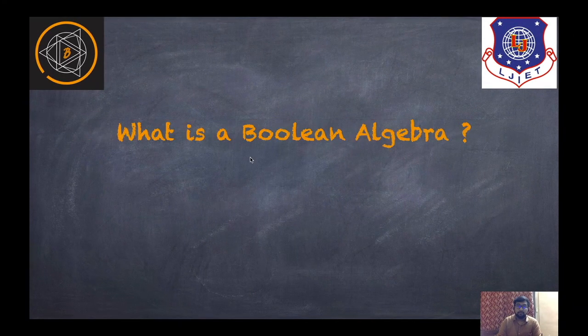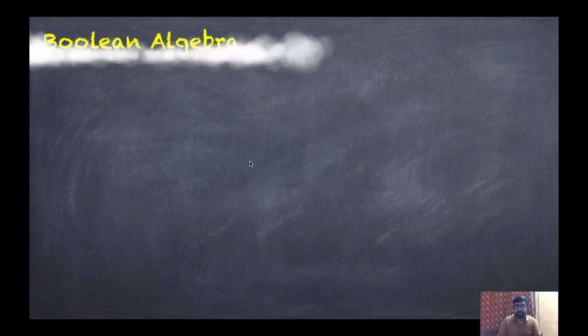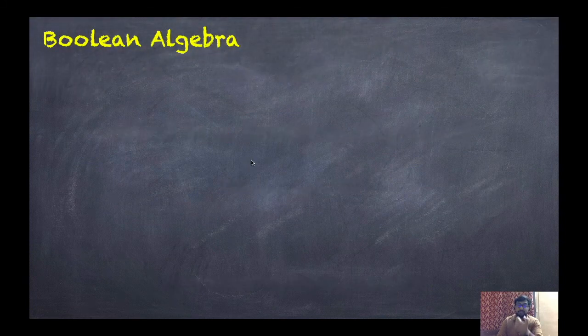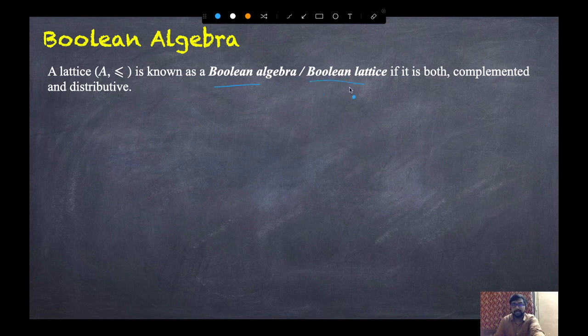Hey everyone, this is Barkov Sothar and today we are going to learn what is a Boolean algebra. In this session we will understand what is a Boolean algebra and some examples. A lattice (A, ≤) is known as a Boolean algebra — also called a Boolean lattice — if it is both complemented and distributive.